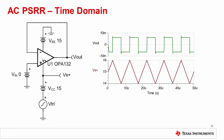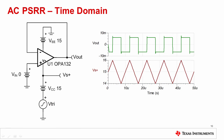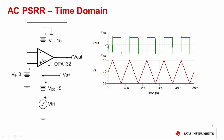Now let's look at how PSRR works when non-sinusoidal waveforms are applied to an op-amp power supply. In practical circuits, a switching power supply ripple can sometimes look like a triangular waveform. In the example shown here, we look at the effects of a 2 volt peak-to-peak triangle wave applied to the supply voltage of the OPA132. Surprisingly, the output looks like a square wave with amplitude a little less than 10 millivolts peak-to-peak. What causes the shape of the waveform to change?